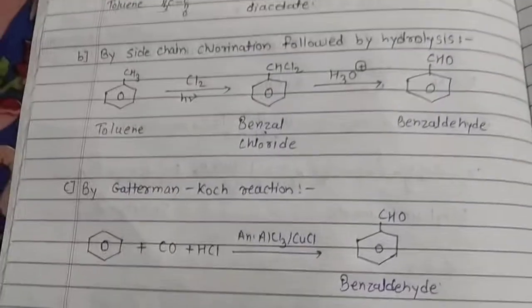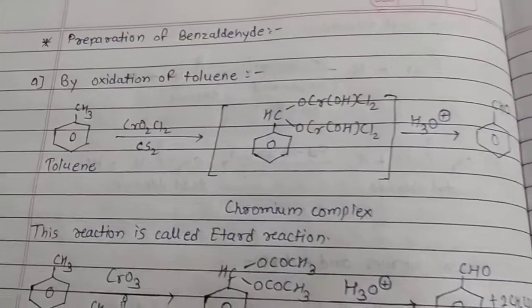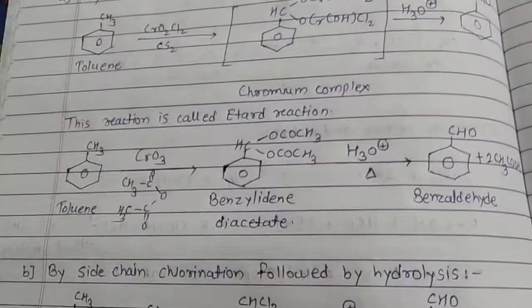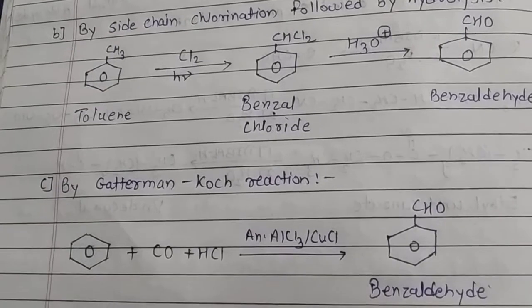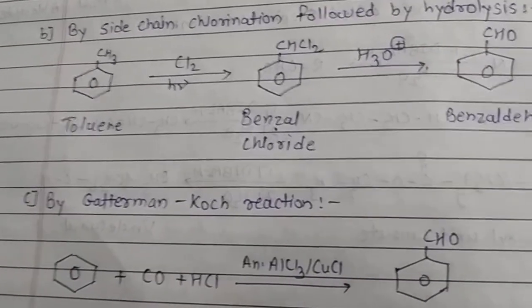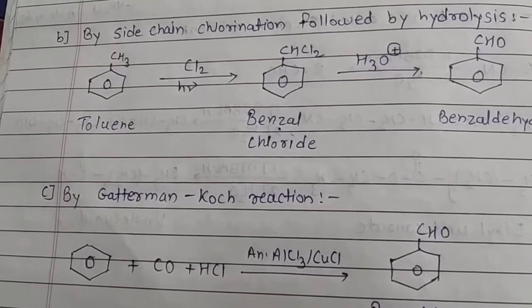Benzaldehyde is prepared by these three methods: by oxidation of toluene, by side chain chlorination followed by hydrolysis, and third by Gatterman-Koch reaction. That's all. Thank you for watching the video.